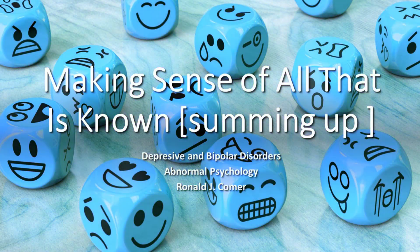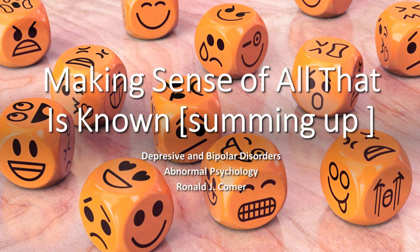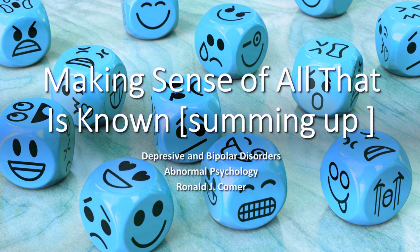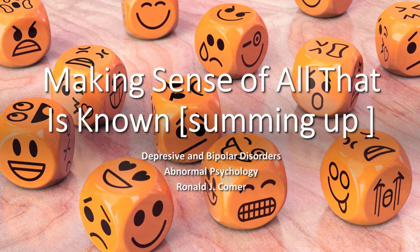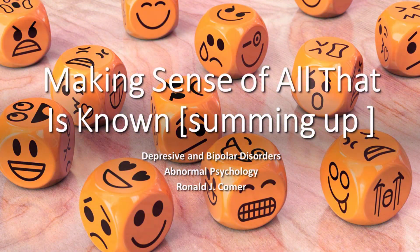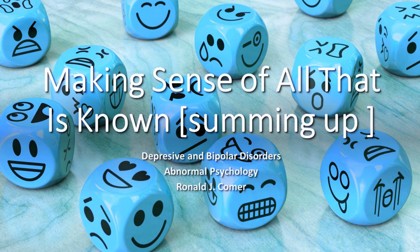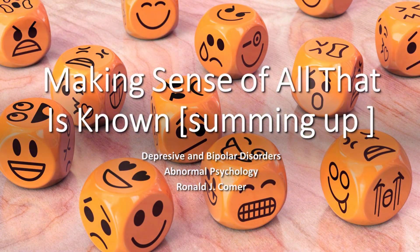According to Seligman's learned helplessness theory, people become depressed when they believe that they have lost control over the reinforcements in their lives and attribute this loss to causes that are internal, global, and stable. Sociocultural theorists propose that unipolar depression is influenced by social and cultural factors. Family social theorists point out that a low level of social support is often linked to unipolar depression, and multicultural theorists have noted that the character and prevalence of depression often vary by gender and sometimes by culture.